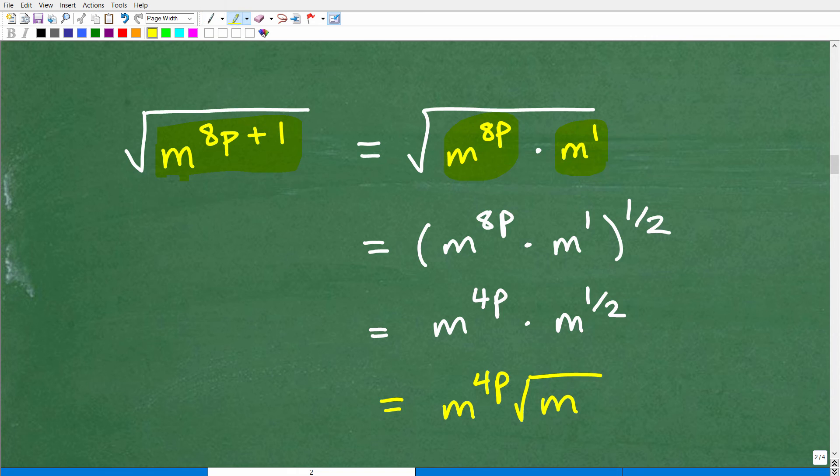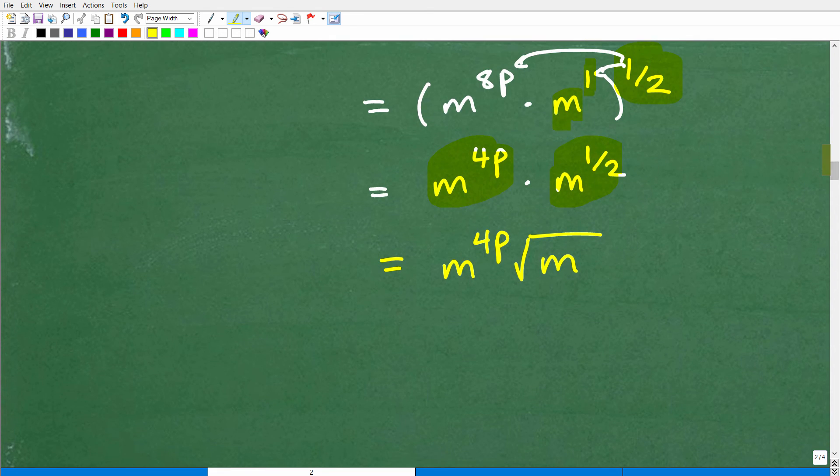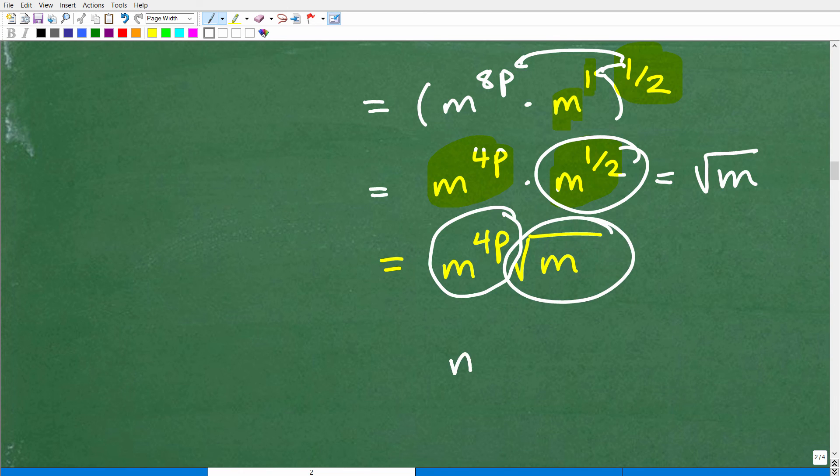All right. So now I'm going to take this whole thing to the 1 half power and now I'm going to distribute. I can distribute this 1 half to both of these internal factors, so to the exponents. So 1 half times 8p is m to the 4p and then I have m and this is going to be 1 half times 1, so that's going to be m to the 1 half. And now this is going to make sense. So right here, m to the 4p is simply m to the 4p and then m to the 1 half, we know that anything to the 1 half power is the same thing as the square root. So that's the same thing, m to the 1 half is the same thing as the square root of m. So your final answer is m to the 4p times the square root of m.